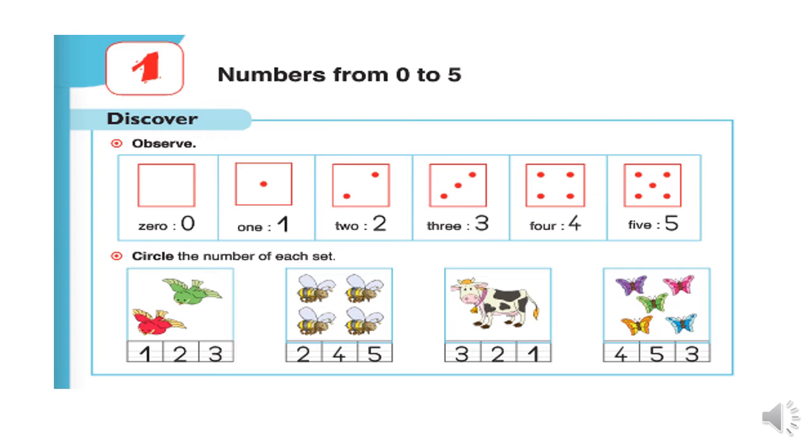How many cows do we have here? It's one cow. So, we circle number one.